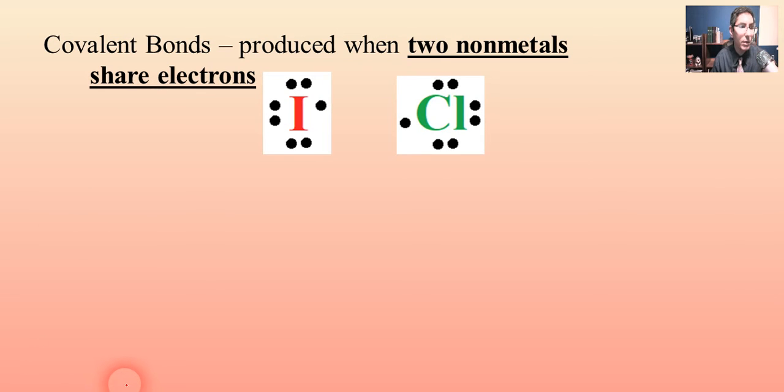So an example here might be with these two nonmetals. We have iodine and we also have chlorine. I've drawn these in such a way so that their valence electrons are very obvious to see. This is something called a Lewis electron dot diagram, or it's just sometimes called a Lewis diagram for short.